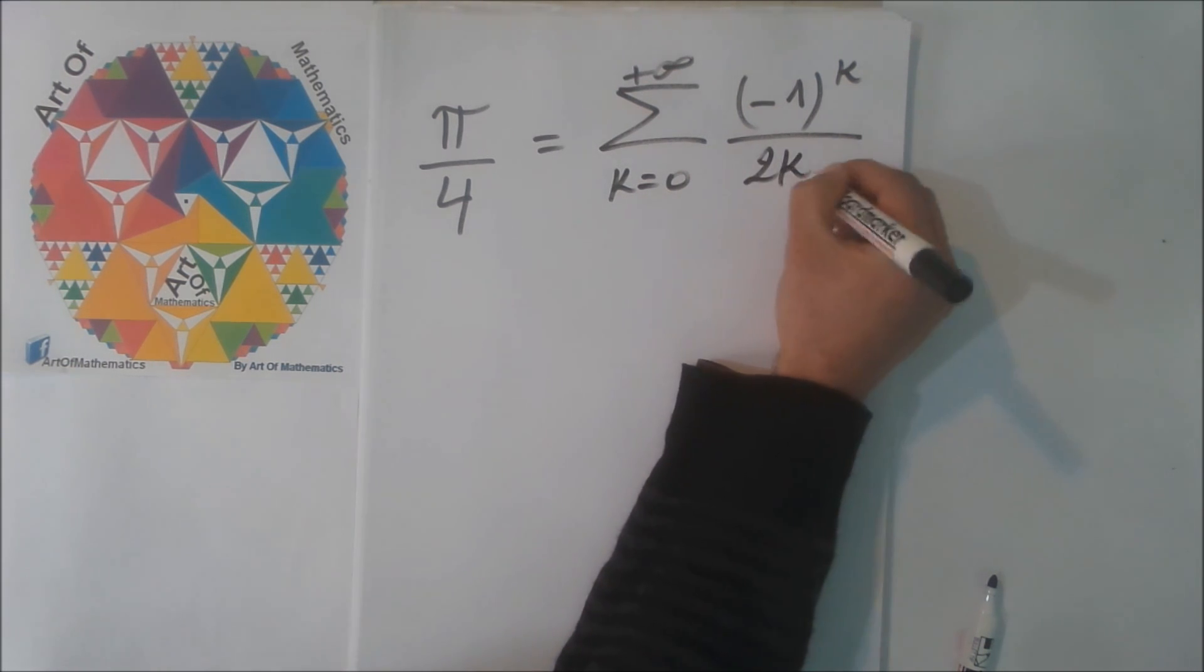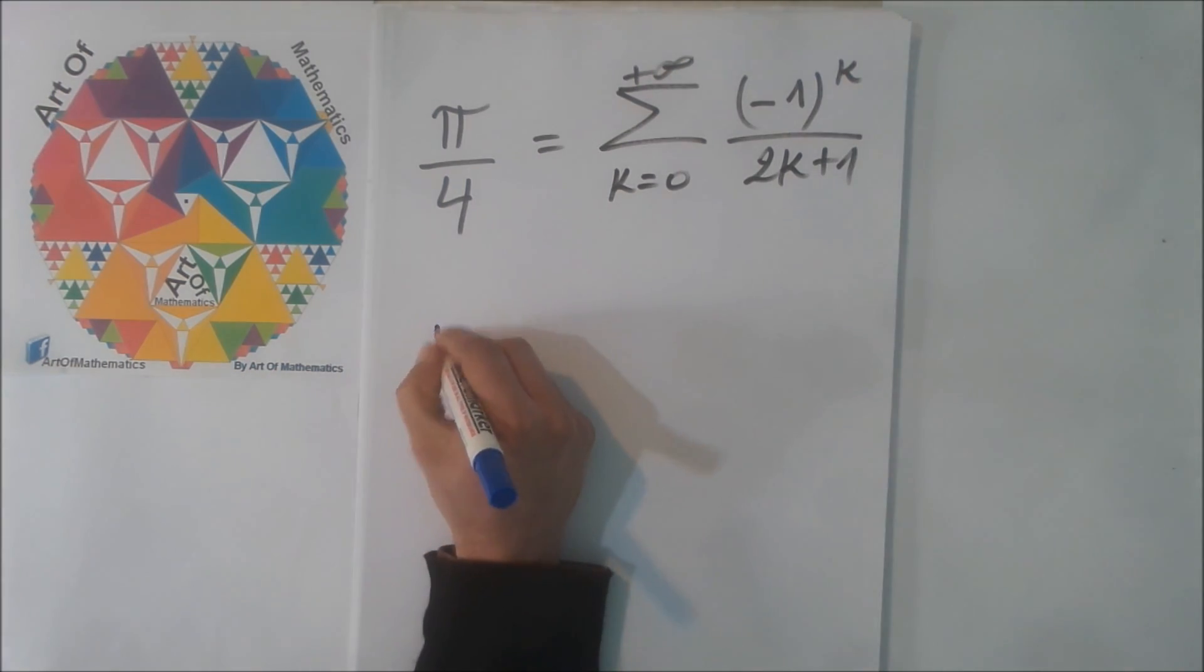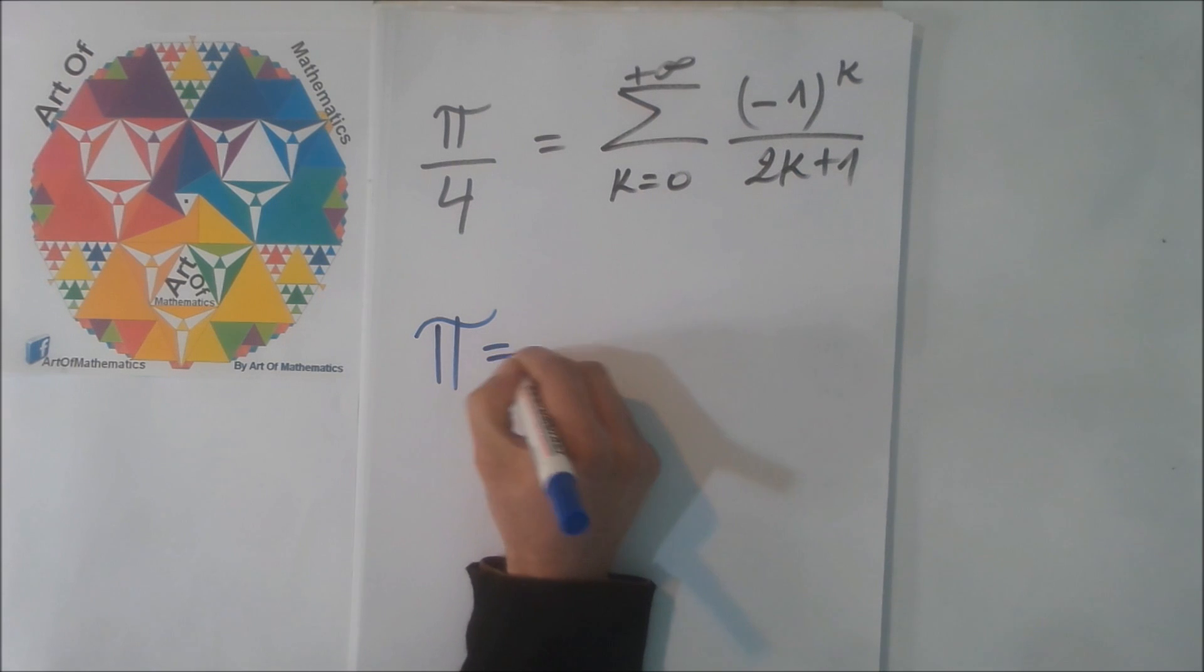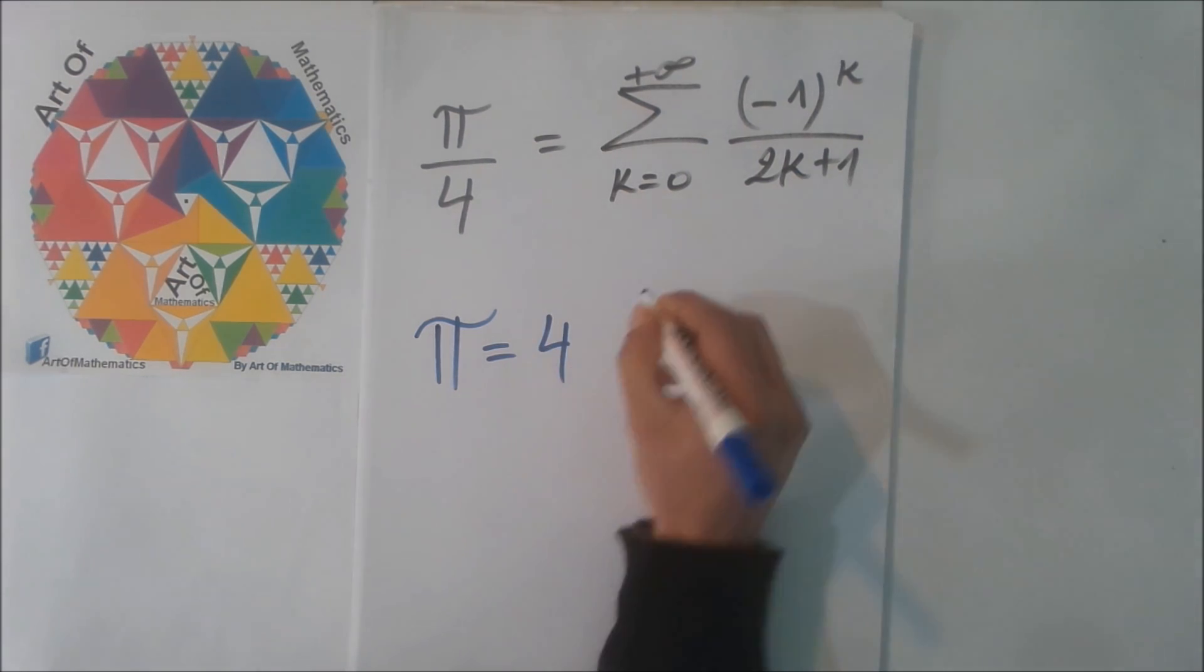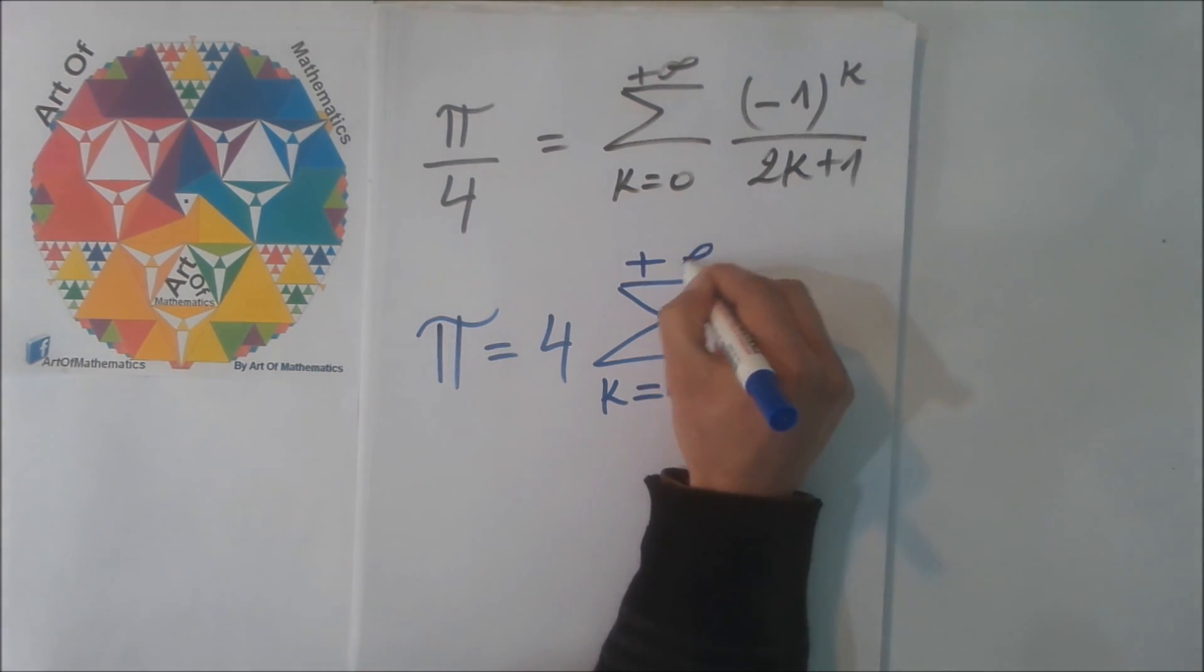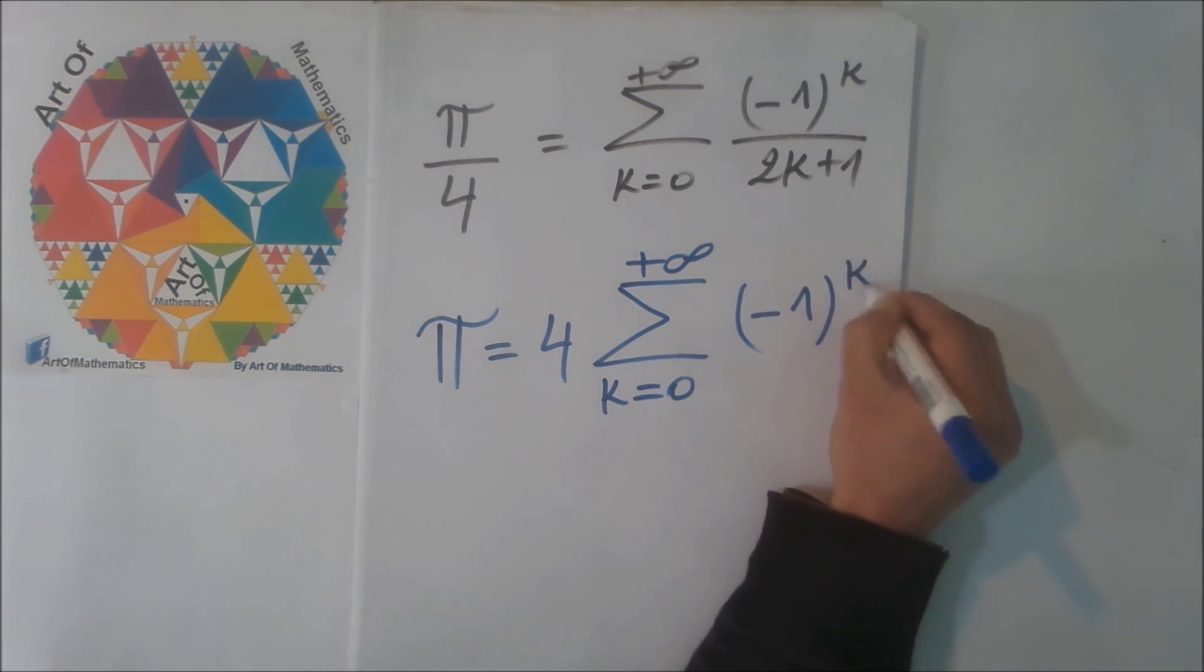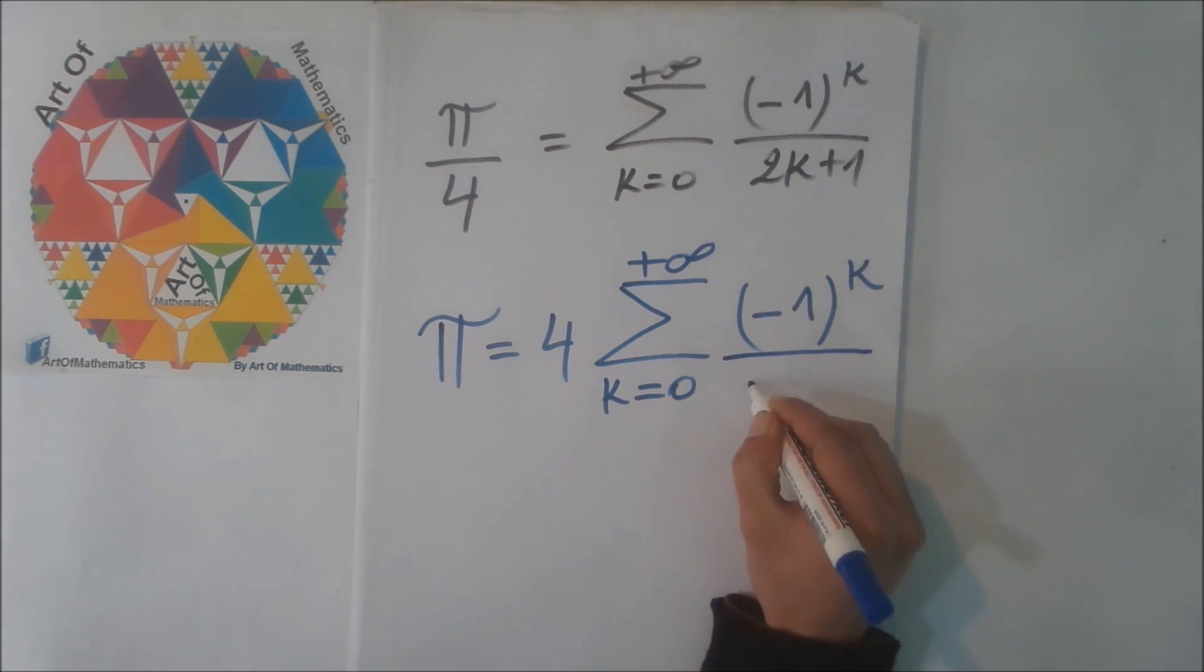This equals the sum from k equals 0 to infinity of minus 1 to the power k plus 1, divided by 2k plus 1, divided by 2 times k plus 1. So finally we get pi equals 4 times this sum, which gives us pi equals 4.